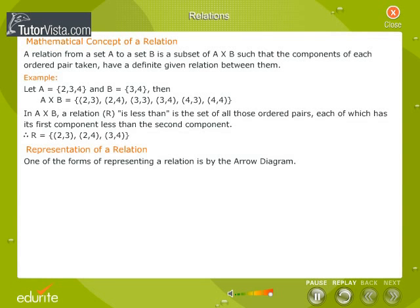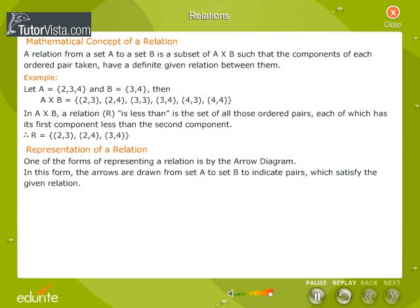One of the forms of representing a relation is by the arrow diagram. In this form, the arrows are drawn from set A to set B to indicate pairs,